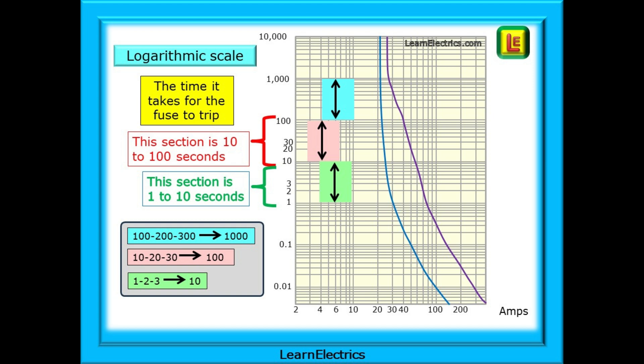The first thing to notice is that the numbers follow a logarithmic scale. They look awkward at first, but let me explain. If we consider the time taken for the fuse to blow, look at the green box. This part of the graph covers the time taken to blow from 1 second to 10 seconds. It has a span of just 10 seconds. 1 second, 2 seconds, 3 seconds, etc. in 1 second increments.